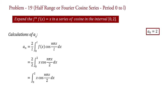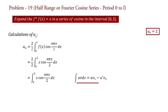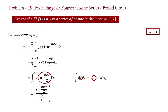Here we will use the formula of integration by parts: integral of u·v dx = u·v1 − u'·v2. Comparing with our integral, we set u = x and v = cos(nπx/2). Applying this formula, we write an equal to x multiplied by v1, where v1 is the integration of cos(nπx/2), giving sin(nπx/2) divided by (nπ/2), evaluated from 0 to 2.